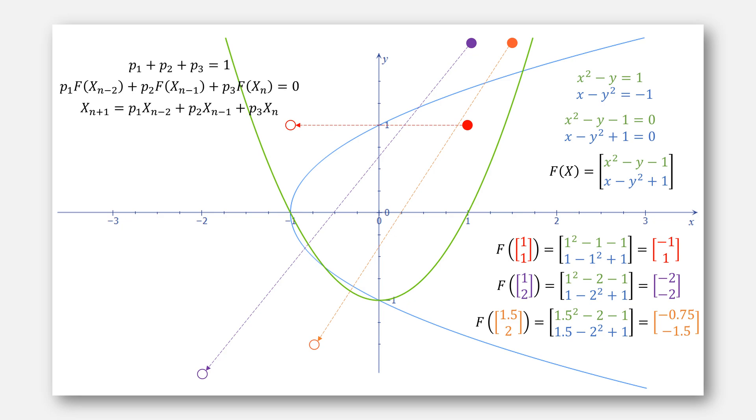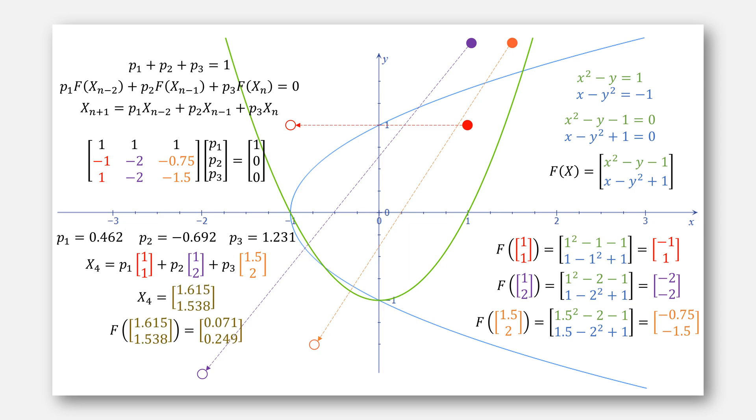And now set up this linear system, which we can rewrite. We can use any linear system solver to solve this. Once we do, we'll get these values for p, which we can then plug in to our summation for our next value for x. Given this value for x4, and plug it into f, looks like that.